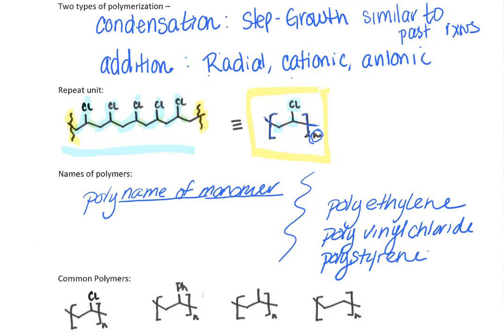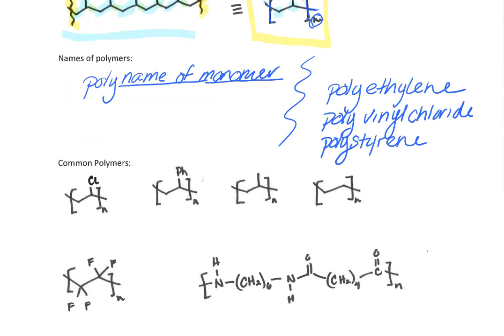I drew out some common polymers here — ones that you see every day and don't realize. This first one is polyvinyl chloride, which we abbreviate as PVC, the same PVC used in plumbing. PVC is recycling number three. This next one is polystyrene, abbreviated PS. Polystyrene can come in foam form and also in sheets. The sheets are rather brittle, so you don't see them a lot in plastic packaging, but if you do, they are number six.